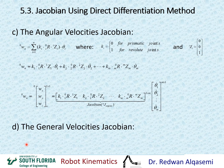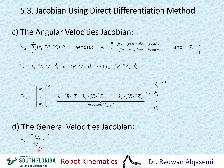Since we have both the angular Jacobian and the linear Jacobian, we can put them together in a single full Jacobian. The top portion includes the linear Jacobian found earlier, and the bottom portion includes the angular Jacobian for this method.